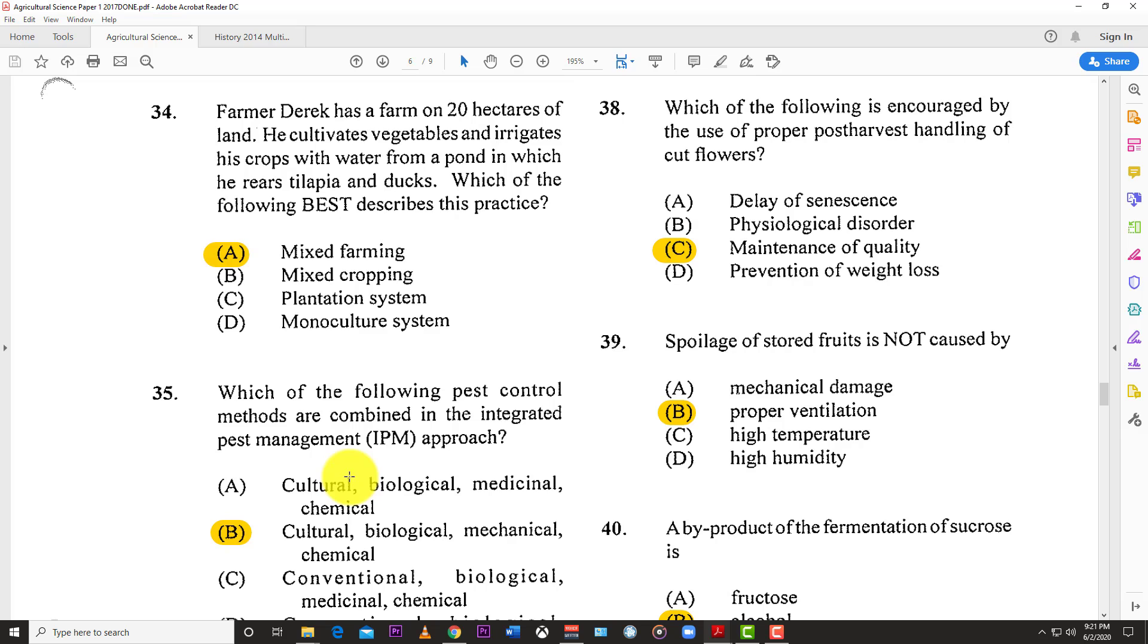Number thirty-seven: In the agriculture sector, quarantine usually results in D, the prevention and control of the spread of disease-causing organisms from one place to the next.